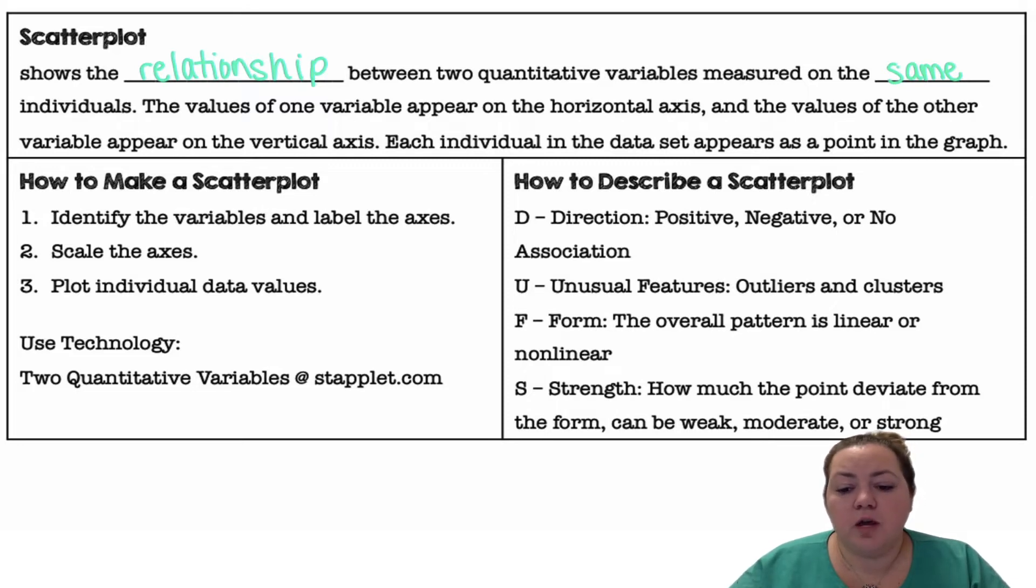And then the strength - how much the points deviate from the form. If you imagine there's a line going through the data, if the points are really close to where that line would be, it's a very strong relationship. If they're more spread out, it's a weaker relationship. We can use words like weak, strong, moderately strong, etc.